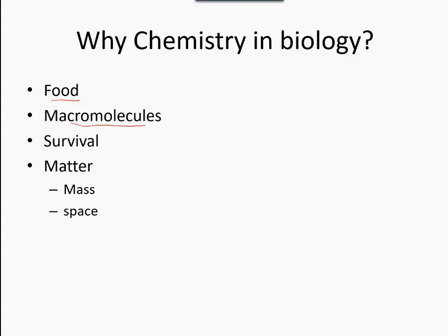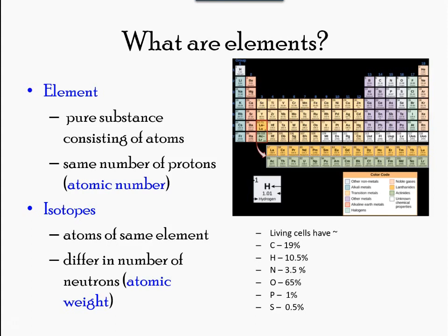Each element is made up of atoms, each with a constant number of protons and unique properties. A total of 118 elements have been defined, however only 92 occur naturally, and fewer than 30 are found in living cells. C, H, N, O, P, S—carbon, hydrogen, nitrogen, and oxygen in abundance, while phosphorus and sulfur in less quantity, as seen from the percentage shown in this PowerPoint.